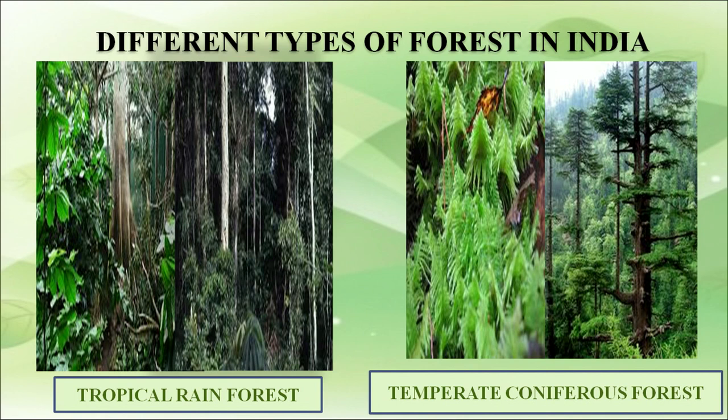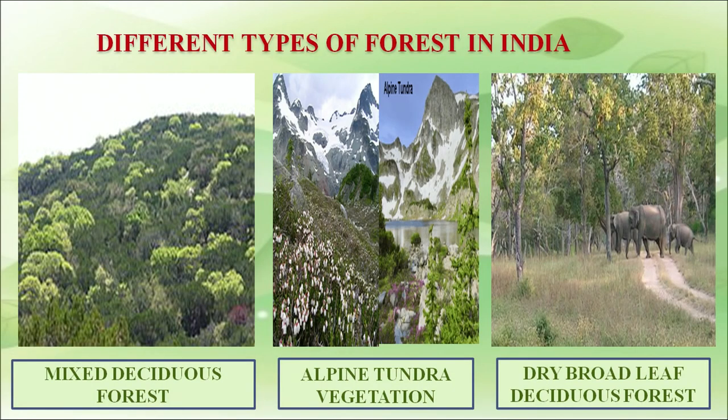The figures show tropical rainforest, temperate rainforest, mixed deciduous forest, alpine tundra vegetation, and dry broadleaf forest — different types of forest as mentioned previously. There is a variety of flora and fauna found in India.